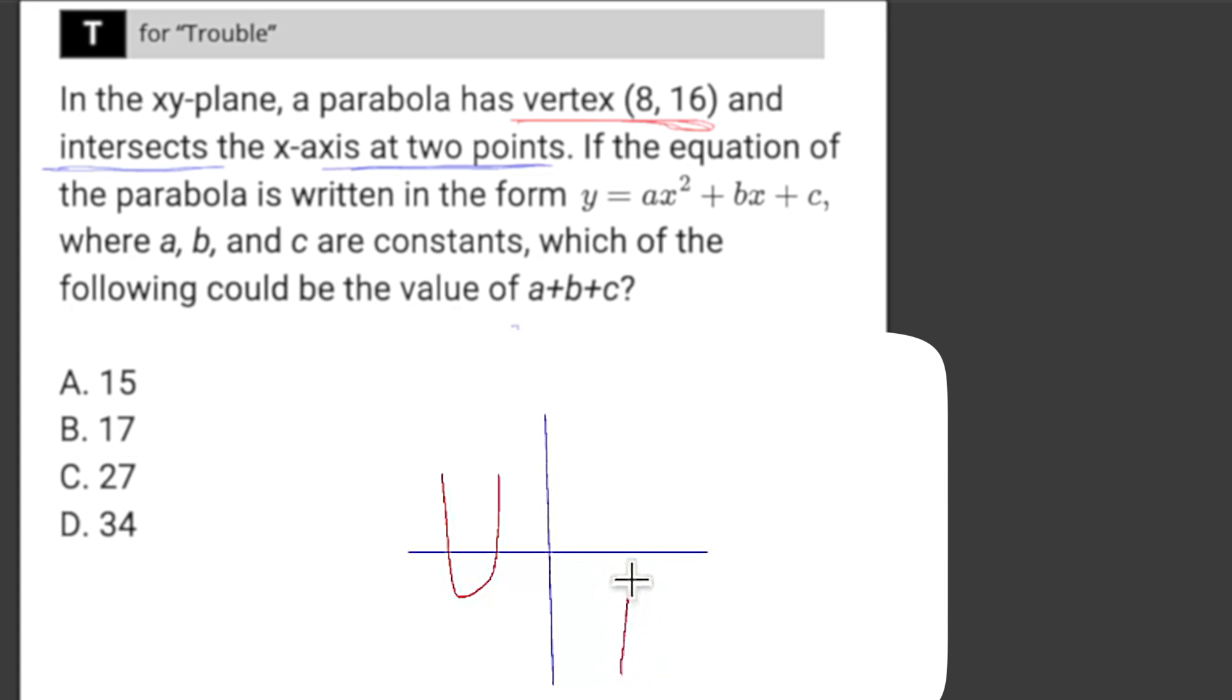Or something like this, where it's flush with the x-axis, and it just touches at this one point right at the vertex. So basically what it's telling me, if it intersects at two points, is that if it is a positive parabola, the vertex is below the line. And if it is a negative parabola, or like an upside down parabola, the vertex is going to be above the x-axis. In this case, we know if the vertex is 8, 16, that 16 is going to be above the x-axis.